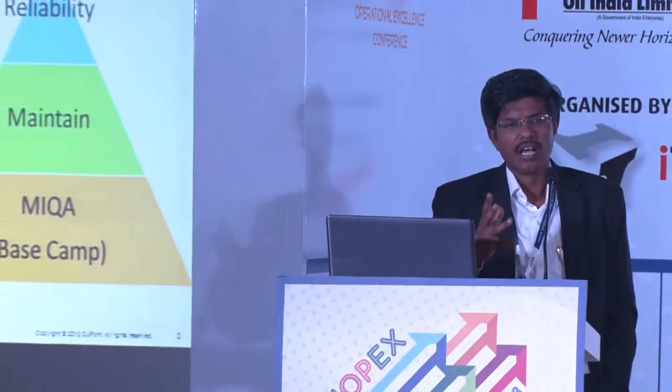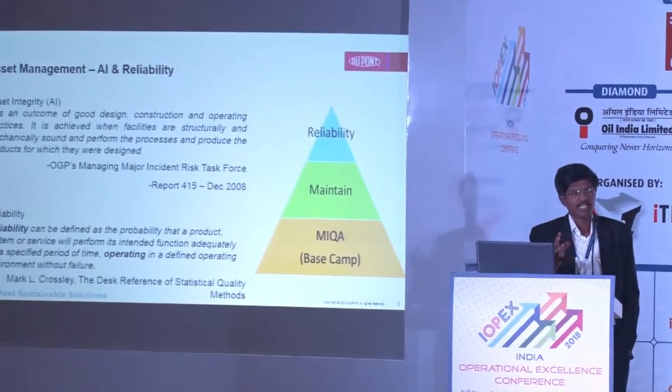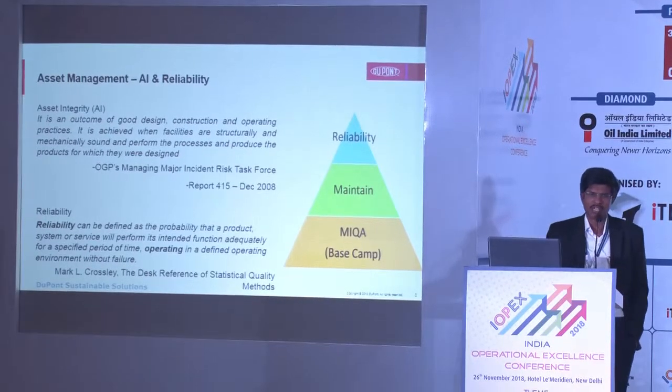Asset integrity is not something limited to when the asset is in operation — it is important right from the design stage. As noted by oil and gas producer associations, it comes as an outcome of good design, construction, and commissioning as well as operational practices. In India, in the last 10 years, specifically in the metal and mining sector, there have been quite a few incidents where things were not handled properly during commissioning.